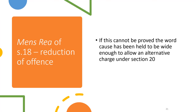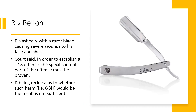If the mens rea cannot be proved, the word 'cause' has been held to be wide enough to allow an alternative charge under section 20 — meaning if there is no intent to cause serious harm, we can drop down to the section 20 offence instead. In Belfont, the defendant slashed the victim with a razor blade, causing severe wounds to his face and chest. The court said that to establish a section 18 offence the specific intent must be proven; the defendant being reckless as to whether such harm would occur is not sufficient for section 18, but would be sufficient for section 20.